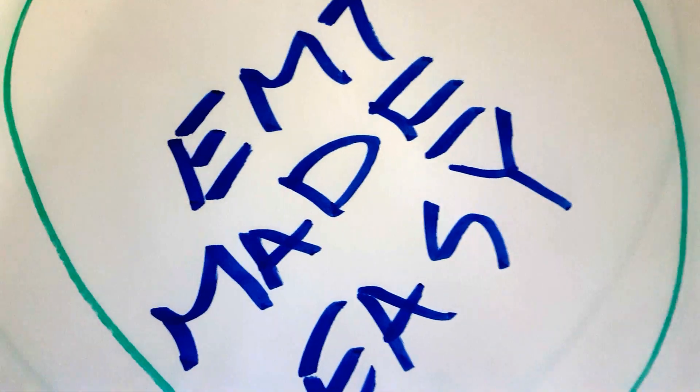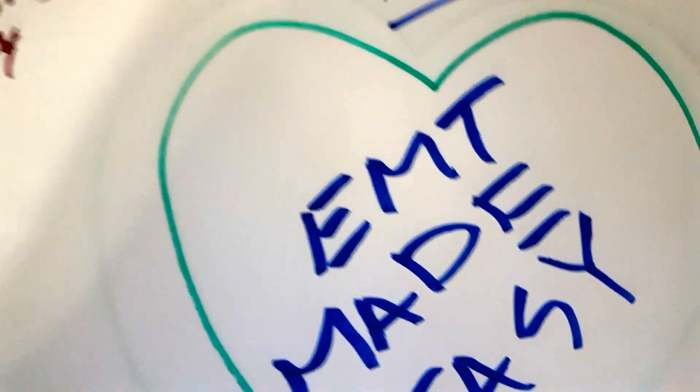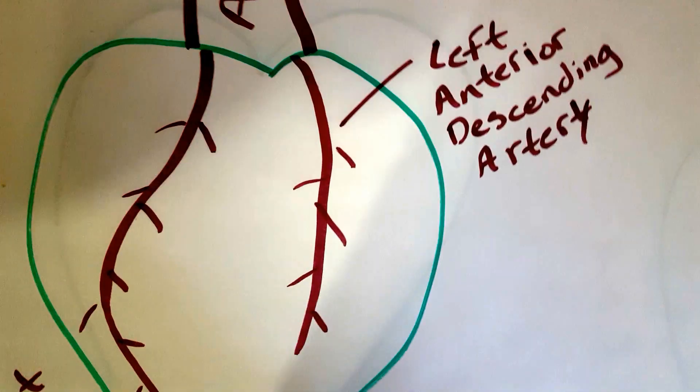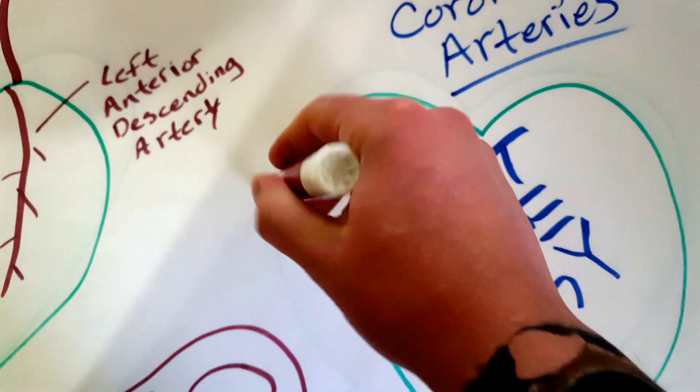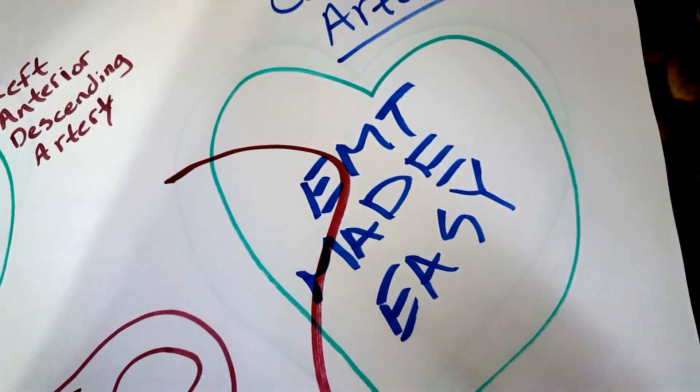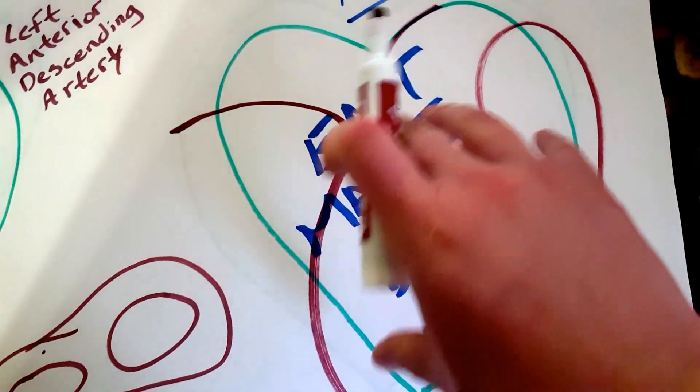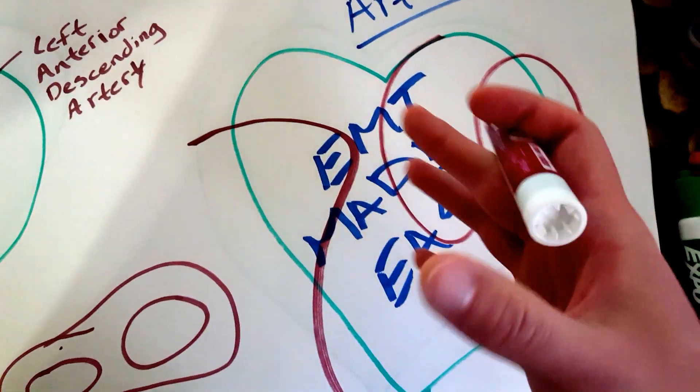So how does the heart get oxygen? Typically people think that because the heart is continuously pumping blood in and out, so blood goes in, out, back in and out, that the heart just automatically gets oxygen. Well, that's not really how it works.